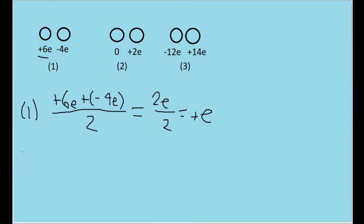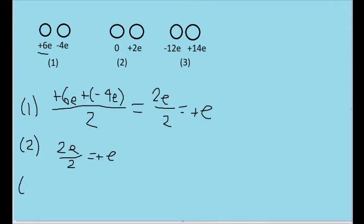So that is 0 plus positive 2E, so that's just 2E divided by 2, or E, so that's again a positive E in both spheres after the transfer. And then in situation 3...